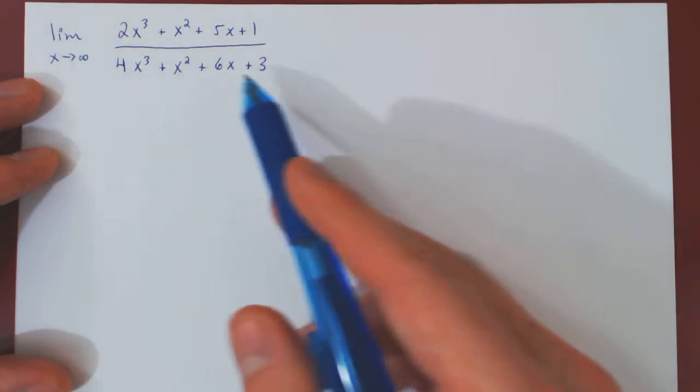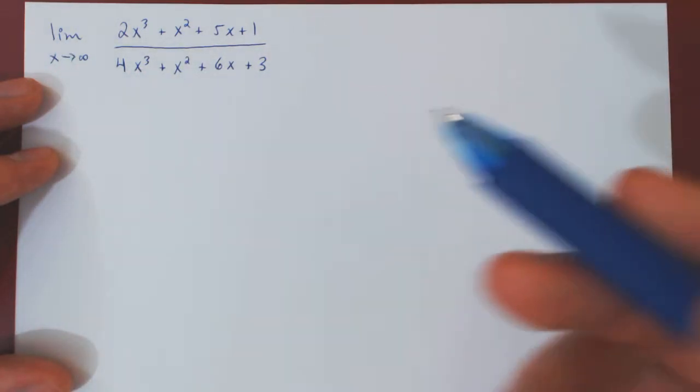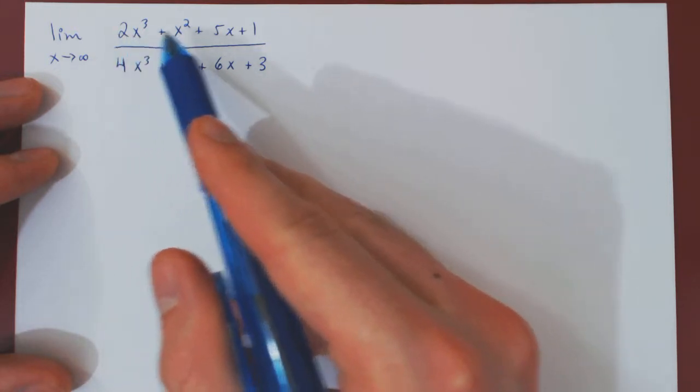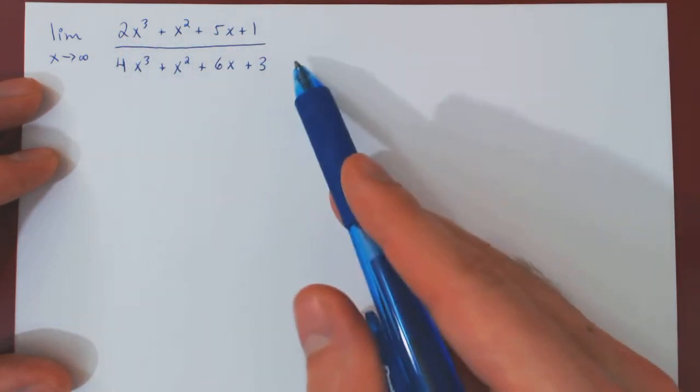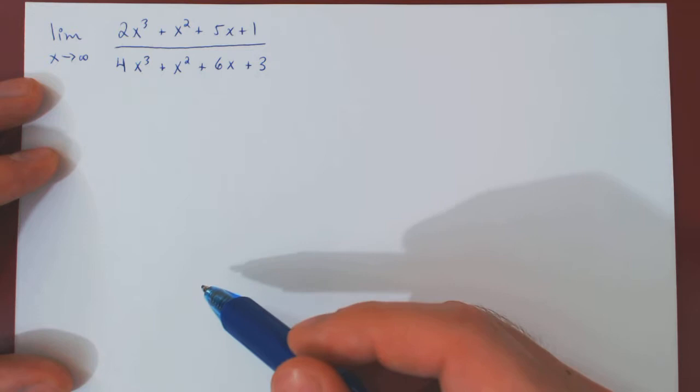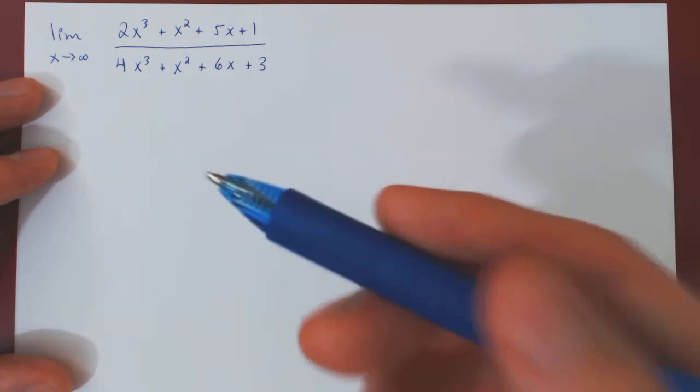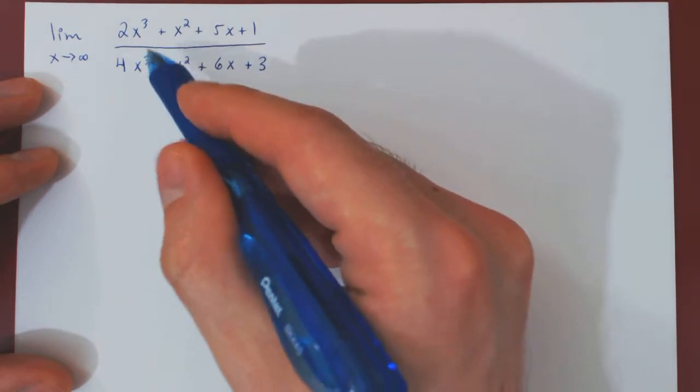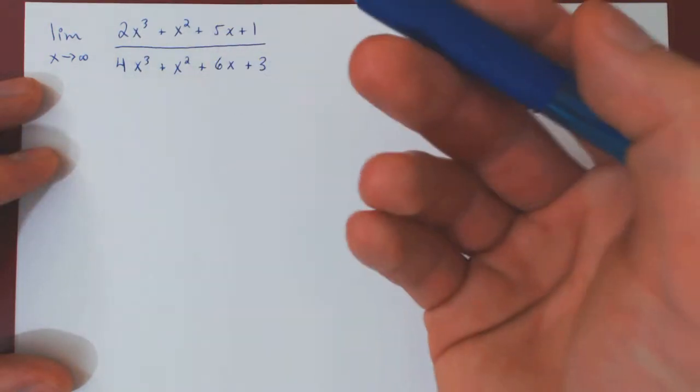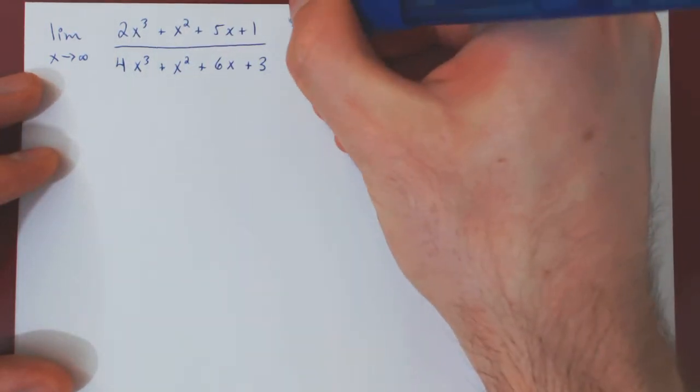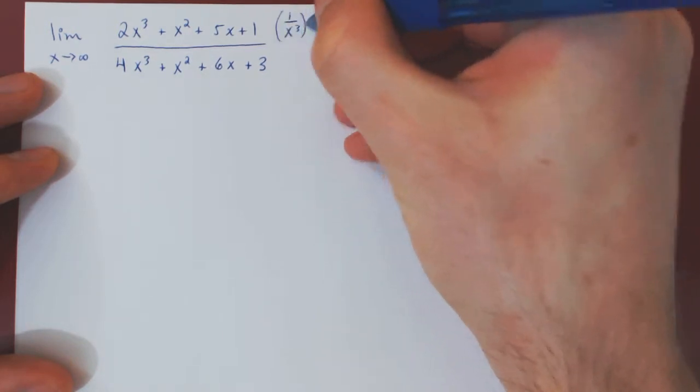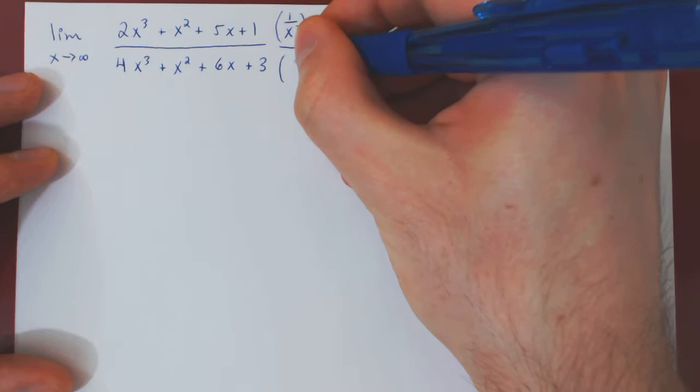So let's first find this limit using a very simple and elementary method. As x tends to infinity, clearly both the numerator and denominator are approaching infinity. But if we use our intuition, we know that the dominant term, the larger term top and bottom, is x cubed, so we can tackle this limit quite easily by simply dividing top and bottom by the biggest term, which is the x cubed.